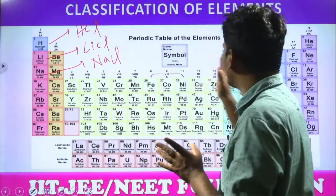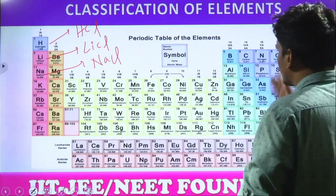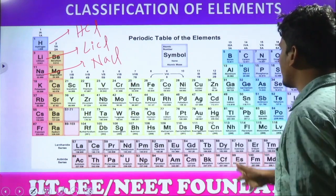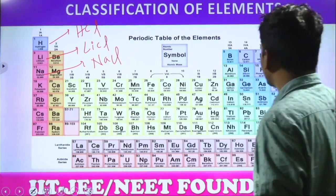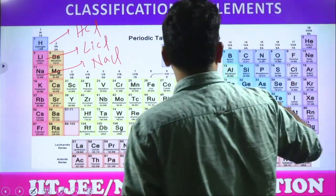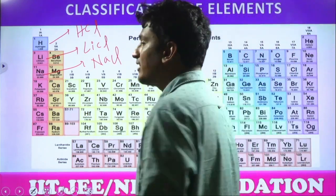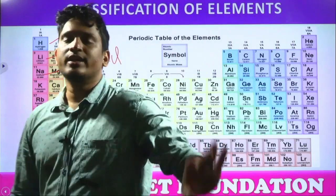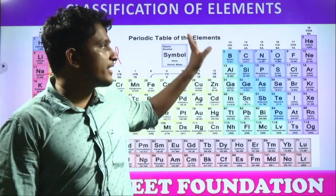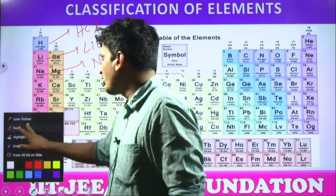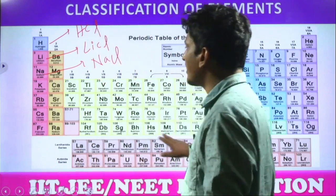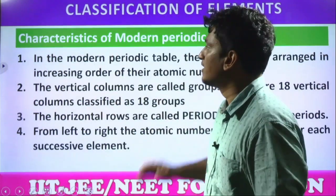Like that, in all these groups — boron, aluminium, gallium, carbon, silicon, germanium, nitrogen, phosphorus, oxygen, sulfur — all these groups show similar chemical reactivity group-wise. So the modern periodic table has 18 groups and 7 periods.